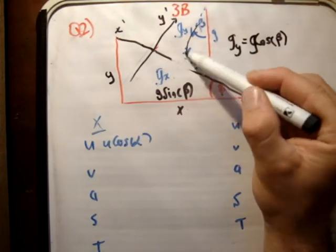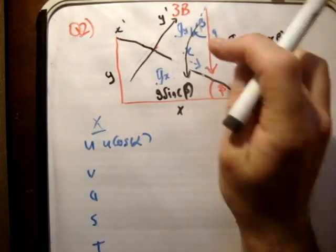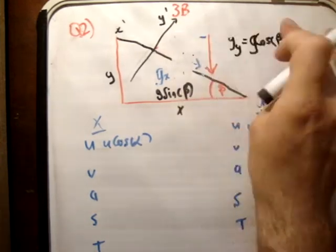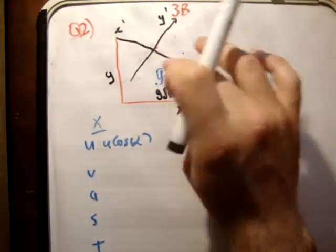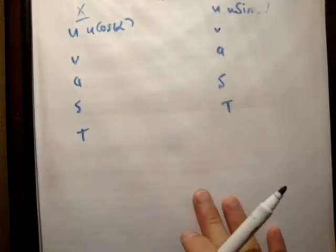Does that make any sense? Opposite is this direction here, so that gives sine, and adjacent is that one there. Now, there's something very important here. I'm just going to get rid of this. I'm going to work down here. It's probably easier.